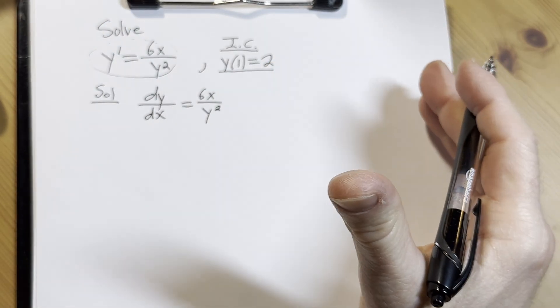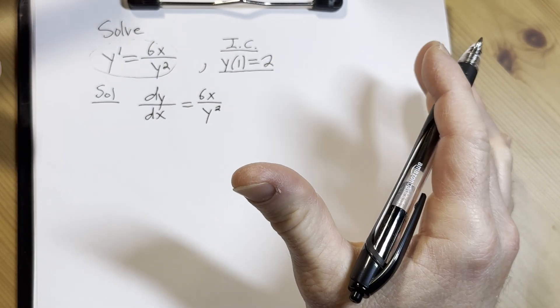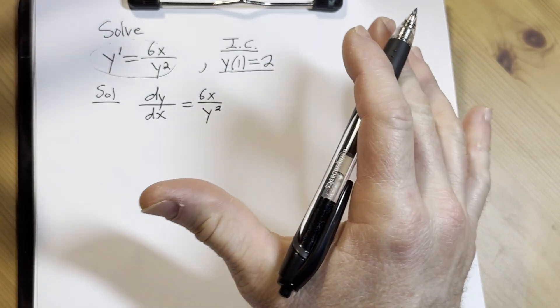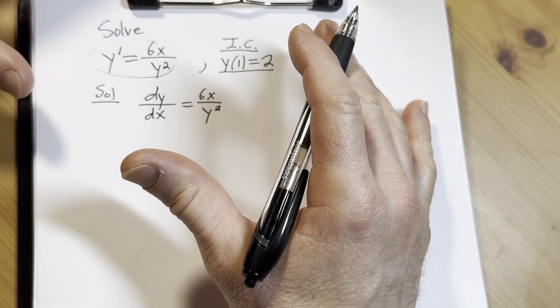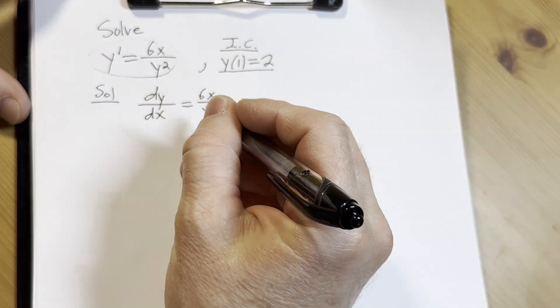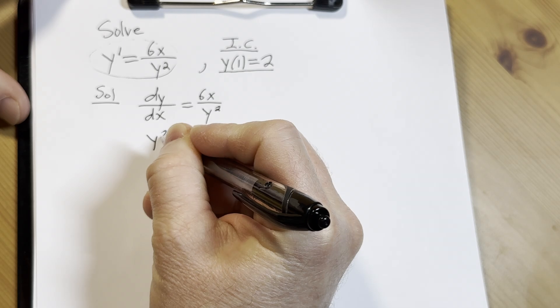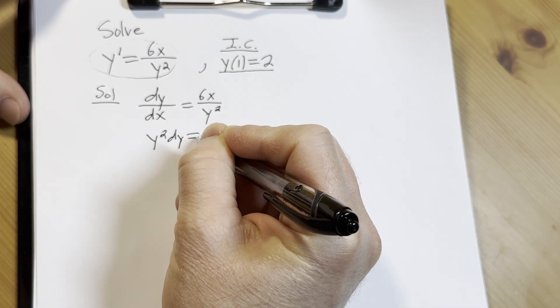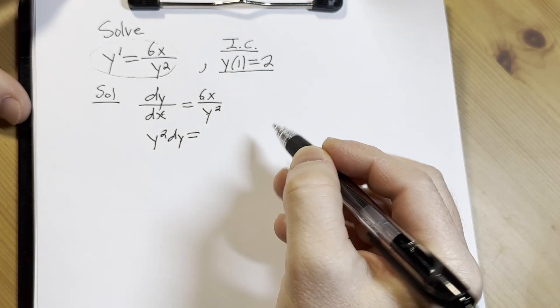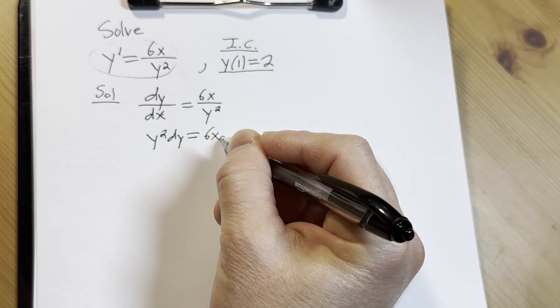Our goal is to get everything with an x on one side by itself together with the dx and all the stuff with y's together with the dy. So we can cross multiply: y squared times dy is y squared dy equals 6x times dx, which is simply 6x dx.